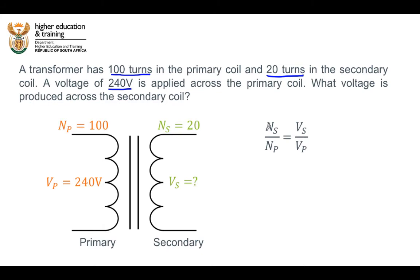We know the number of turns in the secondary coil and the number of turns in the primary coil. We also know the voltage across the primary coil. So if we plug our values in, we get that 20 divided by 100 is equal to the voltage across the secondary coil divided by 240 volts. We can simplify 20 divided by 100 to 1 divided by 5. We can rearrange the equation and multiply both sides of the equation by 240 volts and that will give us that the voltage across the secondary coil is equal to 1 fifth multiplied by 240 volts.